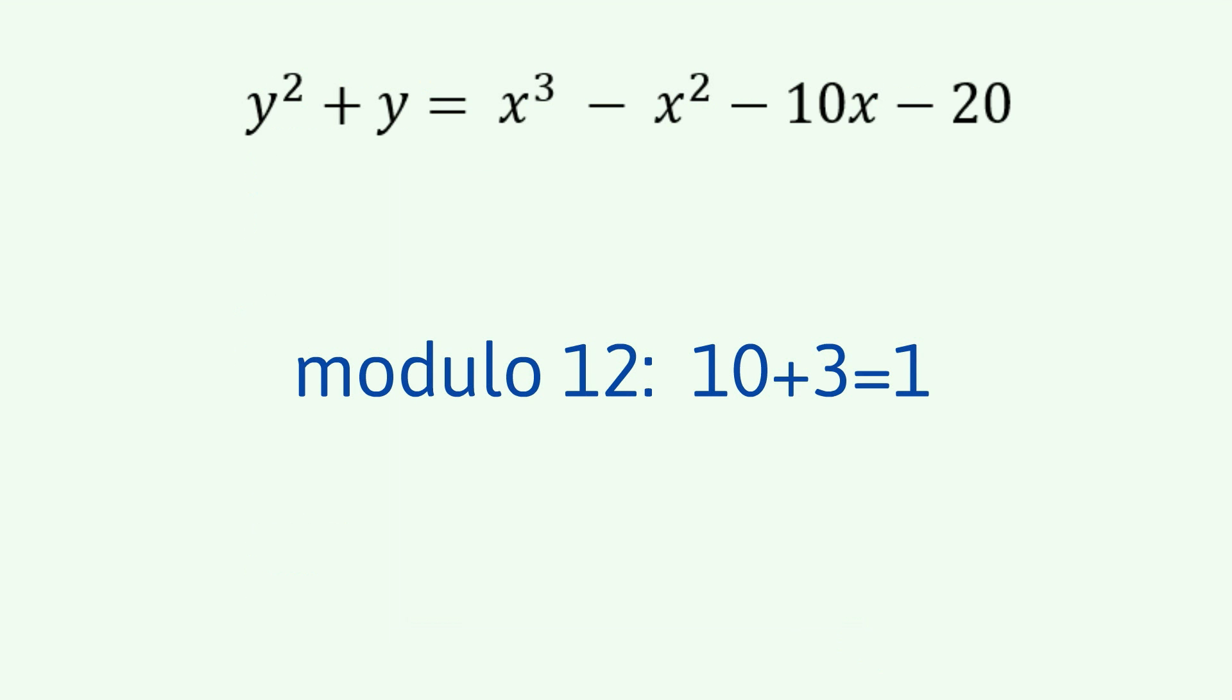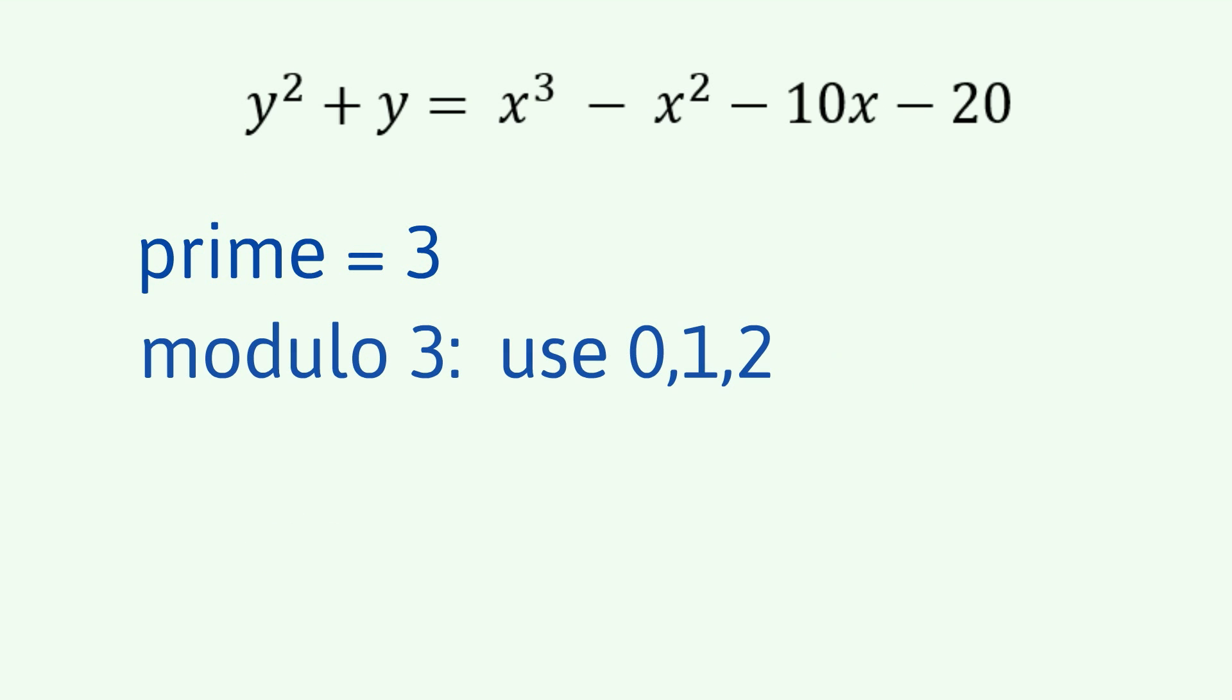Now, what I'm going to show you here applies for prime numbers. So, I'm going to do the first one in a bit of detail using the prime number 3. So, we're in modulo 3 land. All we have are the numbers 0, 1, 2. So, the question is how many solutions are there to the elliptic curve using 0s, 1s and 2s? So, there are four solutions.